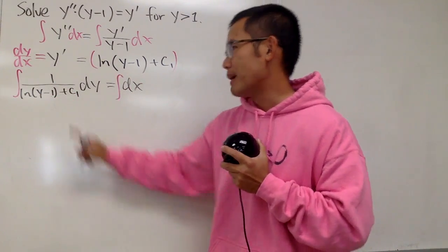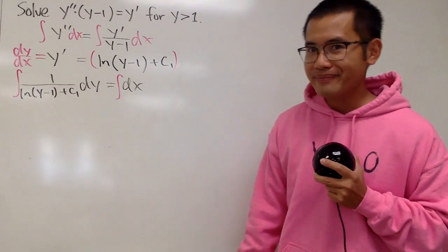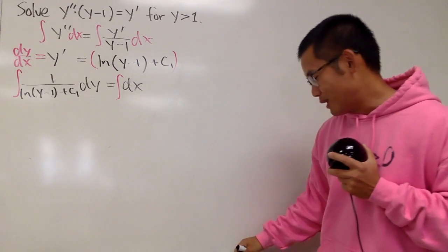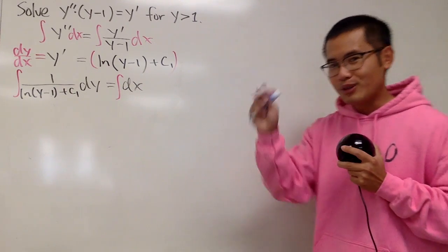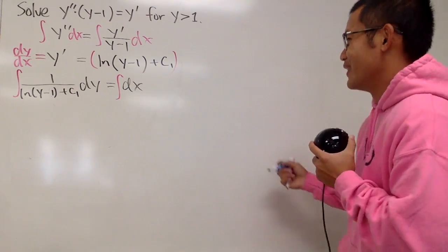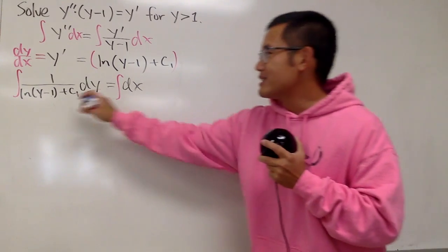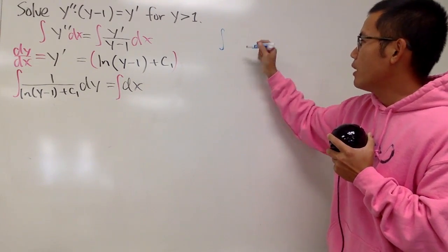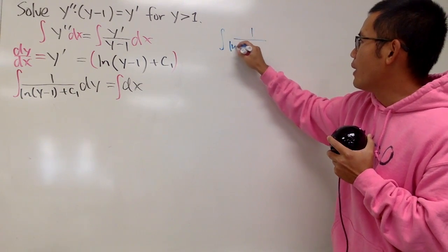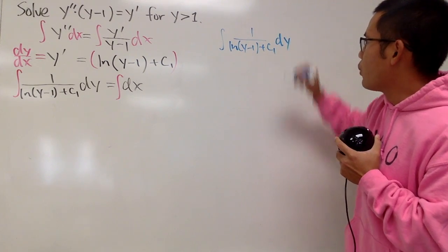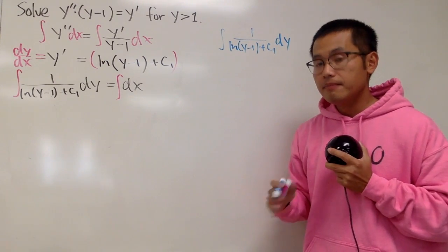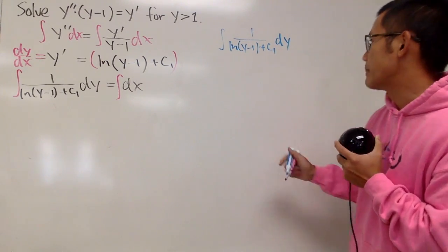This is actually really nice, but how can we deal with this though? This is the time that we have to use special functions, and of course, we have the special blue marker. Alright, so let's take a look right here. So, integral of 1 over ln parentheses y-1 plus c1 dy. Hmm, maybe let's go ahead and do some substitution.